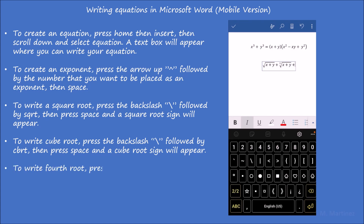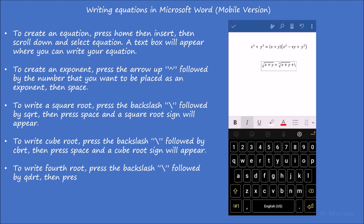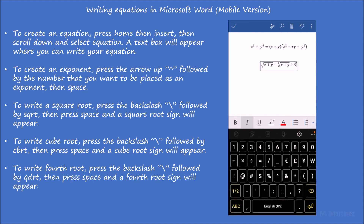To write fourth root, press the backslash, followed by sqrt, then press space and a fourth root sign will appear.